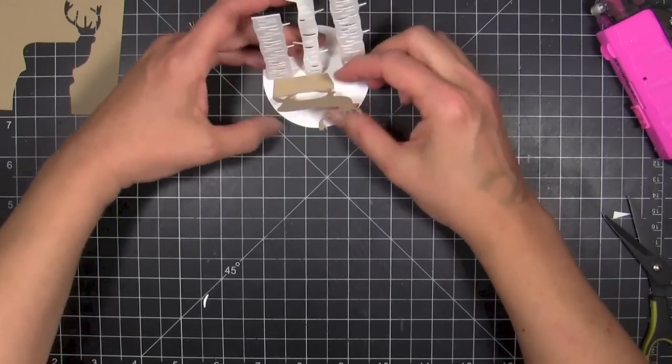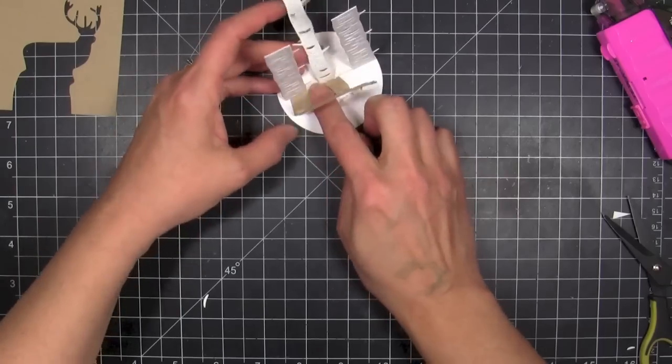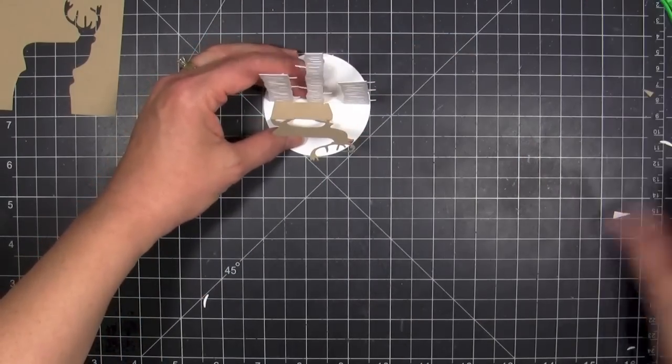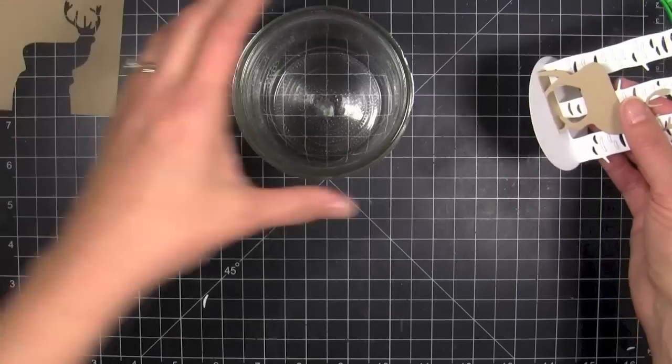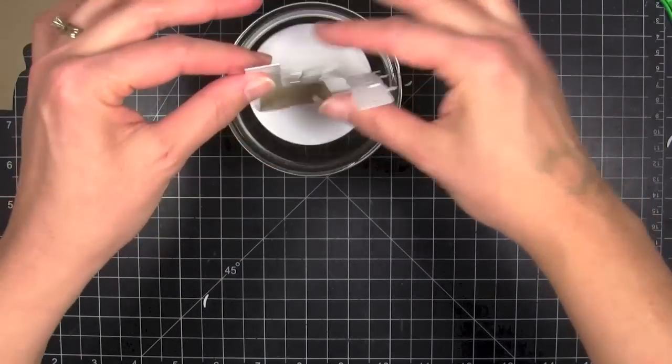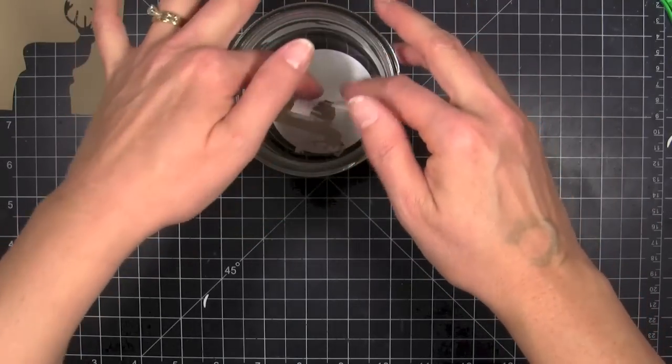With that tape runner, you have some wiggle room so you can kind of lift up and reposition until you get them where you want them. I'm going to slip that down inside my jar. You can see that all fits nicely.